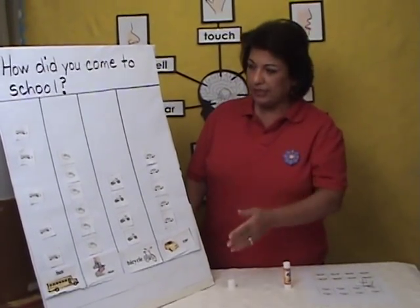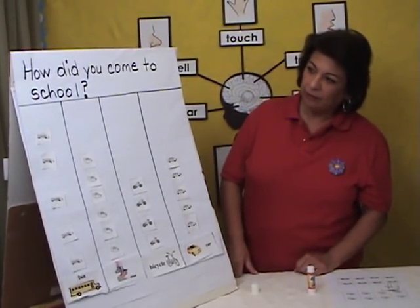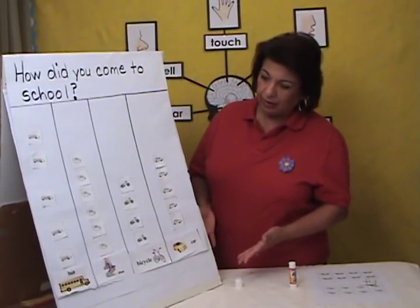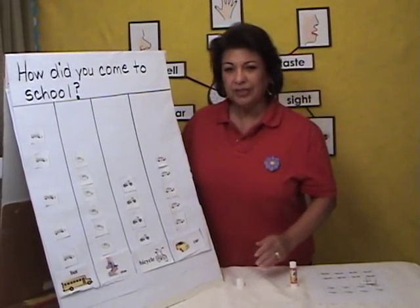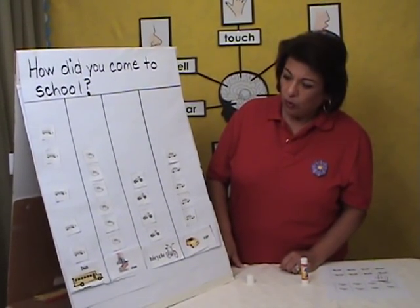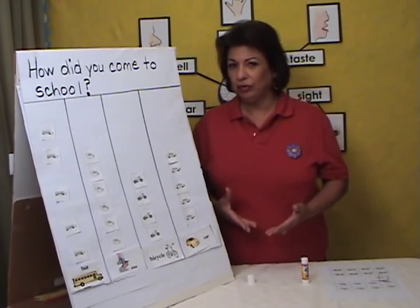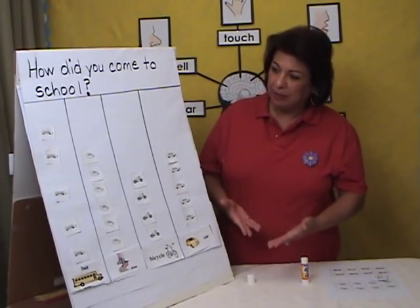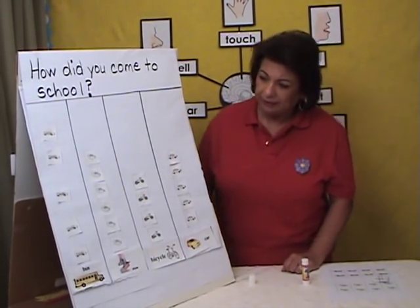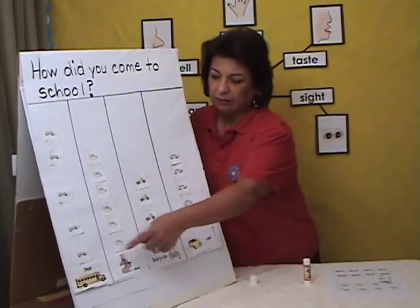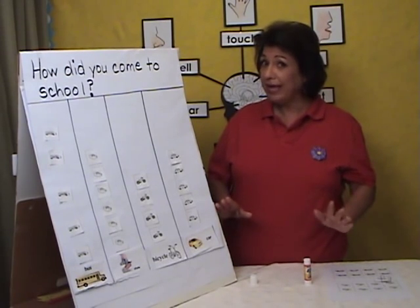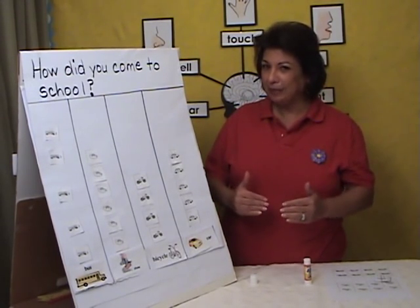After they've done this, everyone will take a look at the graph and determine how they came to school that day. But before we start counting, we'll ask the children: just by looking at the graph, which one is more? How many children rode the bus? Before even counting, some children would say the bus. Why the bus? Because it's taller.